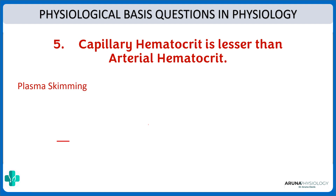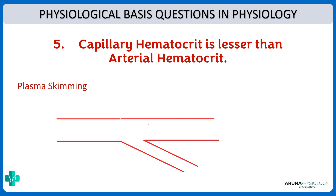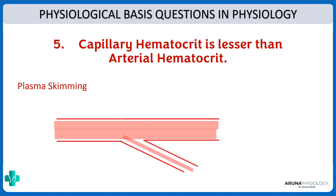What is plasma skimming? Arteries break down into arterioles and then into capillaries. In these micro-vessels, the flow is different — the laminar flow of RBCs is much narrower compared to the main vessel. This means the amount of plasma is proportionally greater in capillaries, so naturally their hematocrit decreases. That is why capillary hematocrit is lesser than arterial hematocrit.